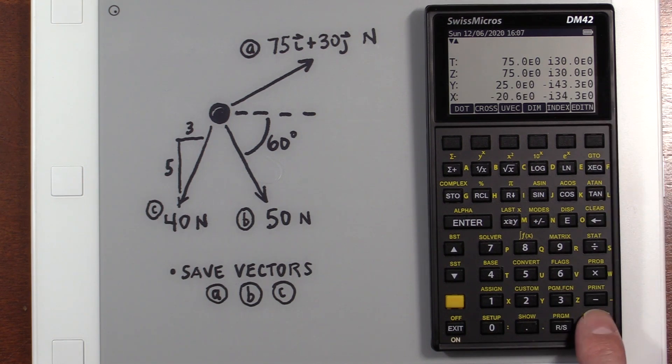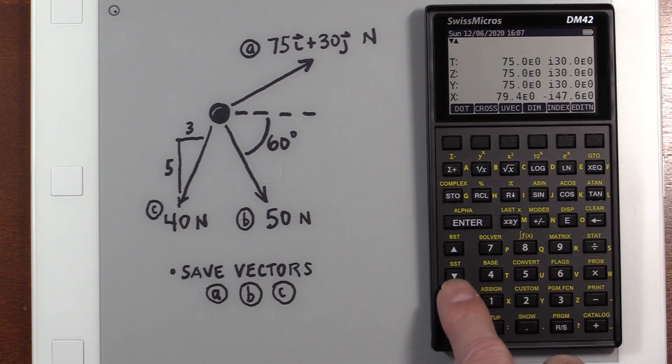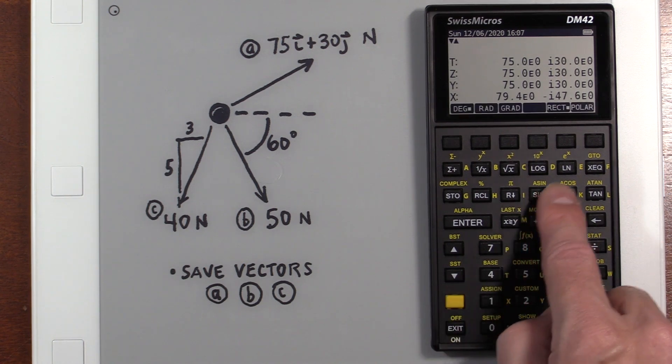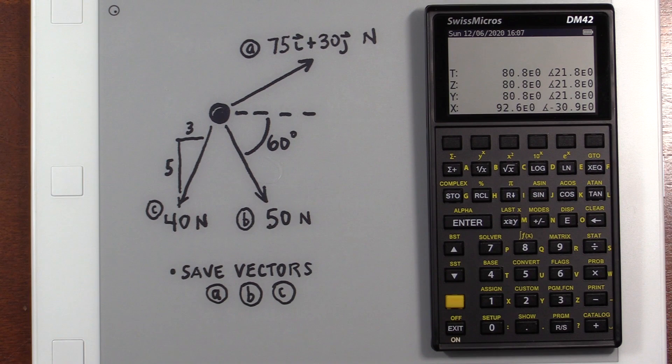Put that in complex mode. I want the unit vector. So I go back into matrix. Go down to menu. Hit uvec for unit vector. Multiply it by 40. So we now have our three vectors. And we can just add those together. So we've got our final answer there. And if we wanted that in polar, we could go back into modes and hit polar. And there's our polar result.